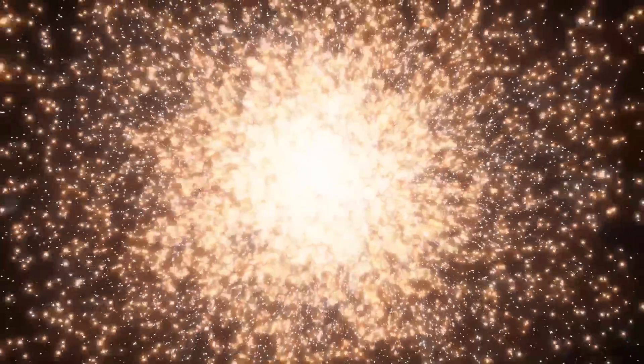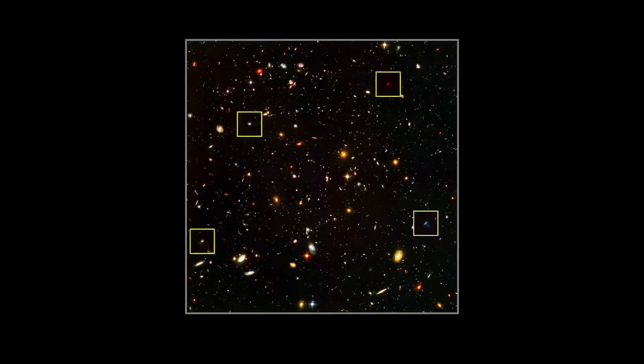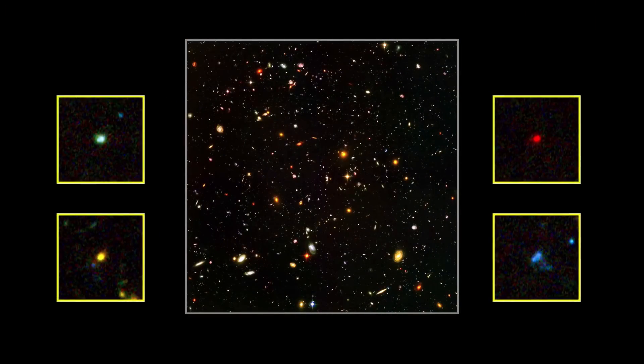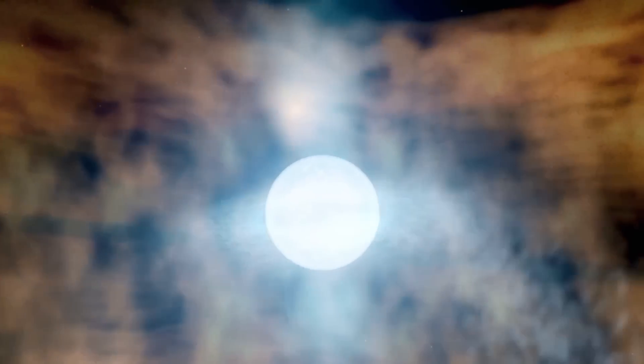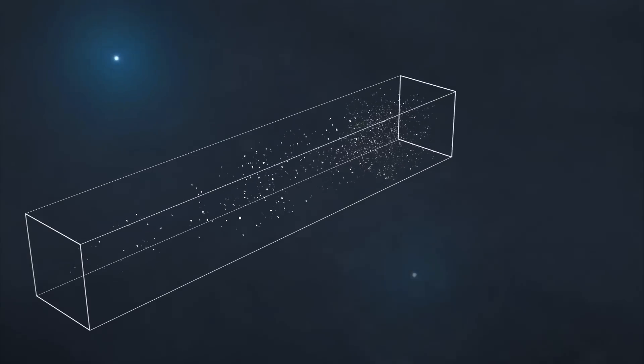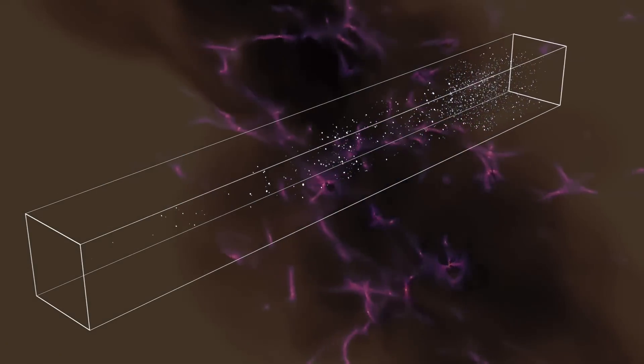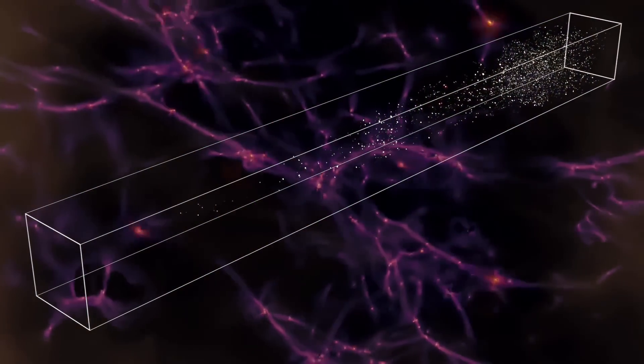That's not what we expected. Galaxies this early in the universe should be chemically simple, mostly hydrogen and helium. But MACS0647-JD is telling us that multiple generations of stars had already lived and died before it. That means galaxy evolution may have started much earlier than we thought.